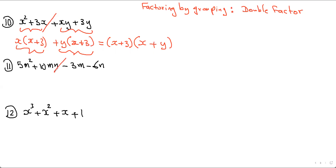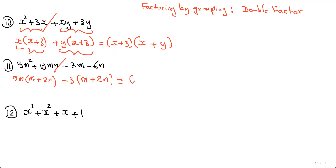The same strategy applies to 5m² + 10mn − 3m − 6n. Draw a line in the middle. From the left pair, take out 5m: 5m² divided by 5m gives m, and 10mn divided by 5m gives 2n, so 5m(m + 2n). For the right pair, take out negative 3: negative 3m divided by negative 3 gives m, and negative 6n divided by negative 3 gives plus 2n, so −3(m + 2n). Both terms now have (m + 2n), so take it out: the final answer is (m + 2n)(5m − 3).